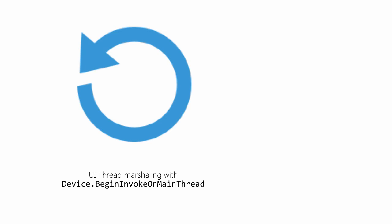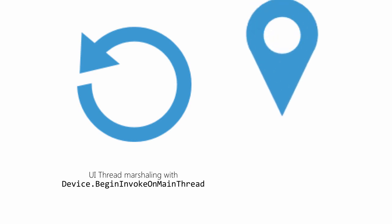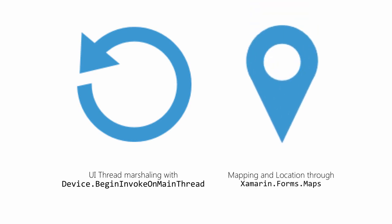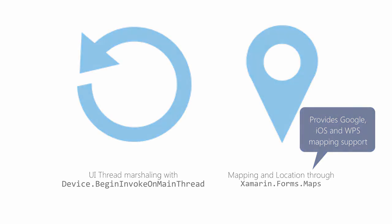You can use Device.beginInvokeOnMainThread to marshal the UI thread if you are on a background thread. This will use the appropriate platform-specific method. Alternatively, you can also use a .NET synchronization context. This is particularly useful for classes you are sharing with non-Xamarin.Forms platforms, such as ASP.NET or a desktop app. Finally, there is also support for cross-platform mapping with the Xamarin.Forms.Maps component, which is an optional install. This abstracts out the mapping support from Google, Apple, and Microsoft into a component that is cross-platform.